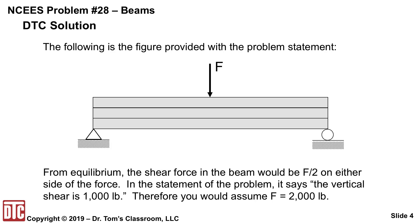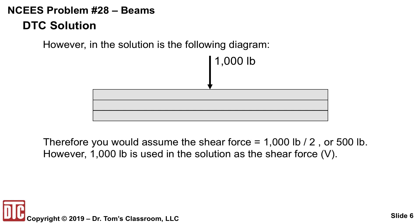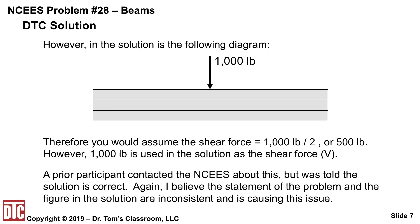But looking at the solution, they have the beam with 1,000 pounds in the middle, so you would assume the shear force would be half of that, or 500 pounds. But in the solution, they use 1,000 pounds as the shear force. A prior participant actually contacted the NCES about this but was told the solution is correct. I believe the statement of the problem, the figure, and the solution are inconsistent and is causing some confusion.